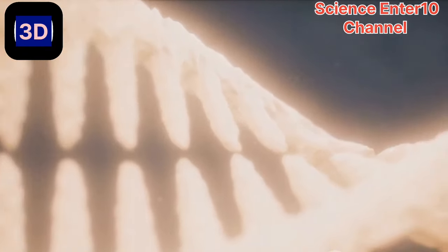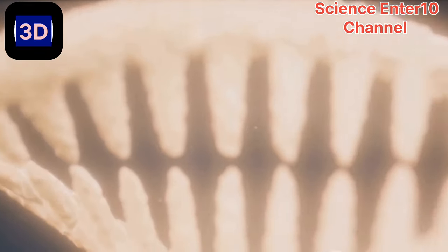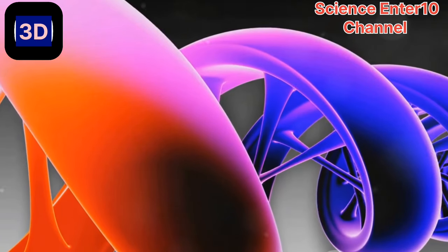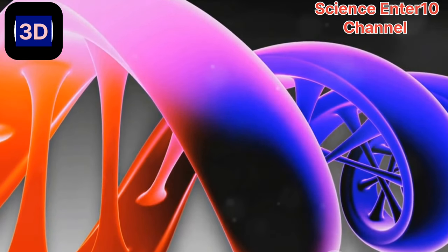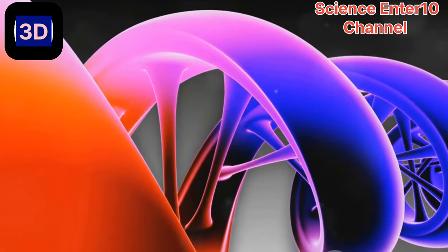This is no gentle separation, though. The spindle fibers shorten, tugging the sister chromatids apart with a force that would make a tug-of-war team envious. The sister chromatids, now individual chromosomes, are pulled to opposite poles of the cell.